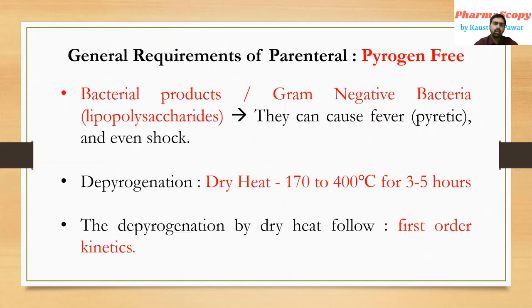Now moving to the next aspect: general requirements of parenteral. The second requirement is that it should be pyrogen-free. Pyrogens are basically bacterial proteins — they are lipopolysaccharides which cause fever and shock if injected into the bloodstream.